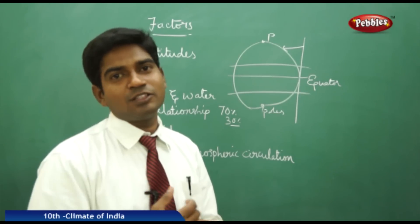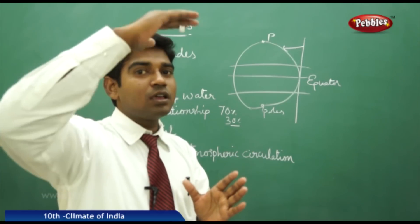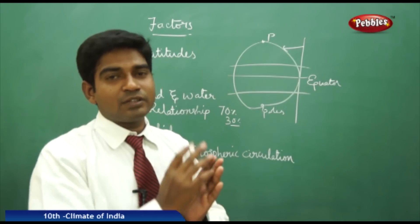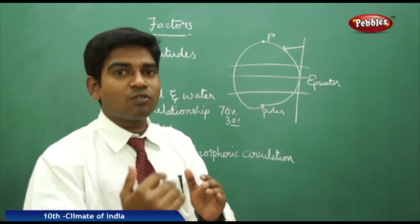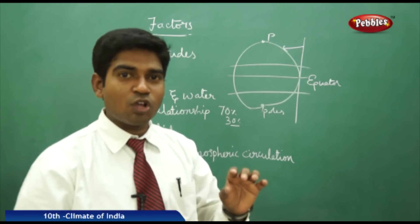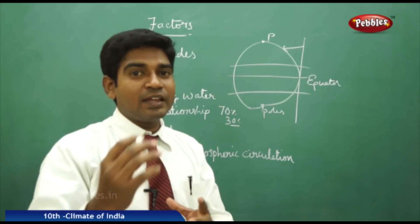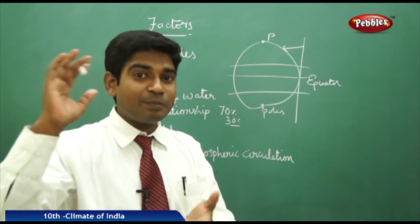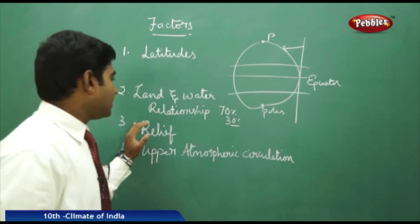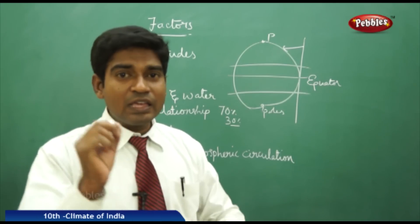Places like Mussoorie, Udhagamandalam (Ooty) — all called hill stations — are at higher elevations above sea level. As we move up, for every 100 meters the temperature drops by approximately one degree Celsius. So at elevations of 3,000 to 4,000 meters, there can be about a 30–40 degree variation from normal levels. This is why people visit these hill stations even in summer — the temperature is less compared to other regions.